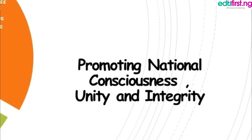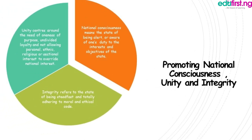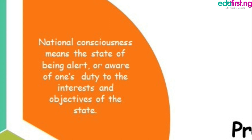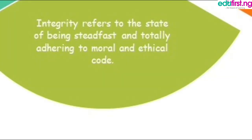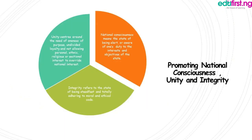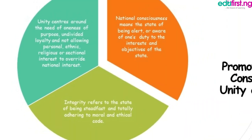Now, ways of promoting national consciousness, integrity and unity. National consciousness means the state of being alert or aware of one's duty to the interest and objective of the state. This includes awareness of one's duty to pay taxes regularly, support the activities of the government, and readiness to fight against evil plotted to destroy or harm the people. Integrity refers to the state of being steadfast and totally adhering to moral and ethical code. Unity centers around the need for oneness of purpose, not allowing personal, ethnic, religious or sectional interest to override national interest. National interest must come before personal interest.